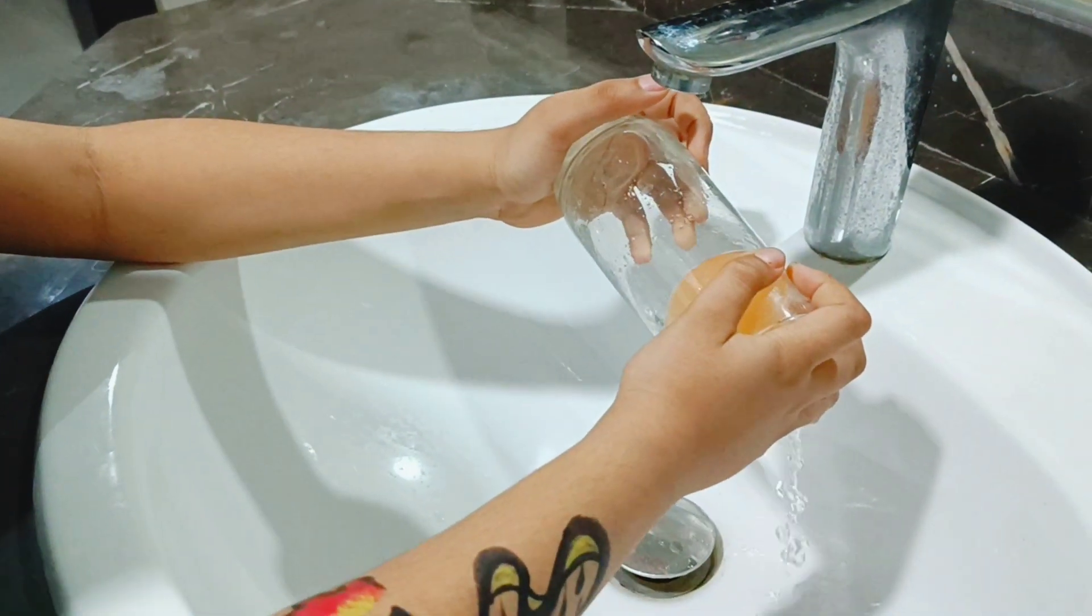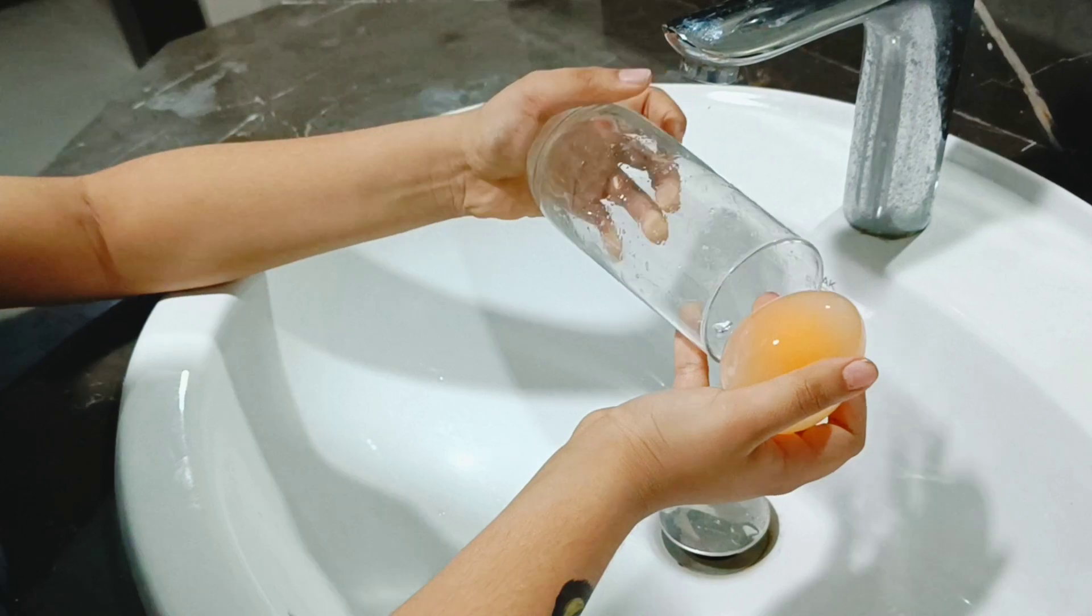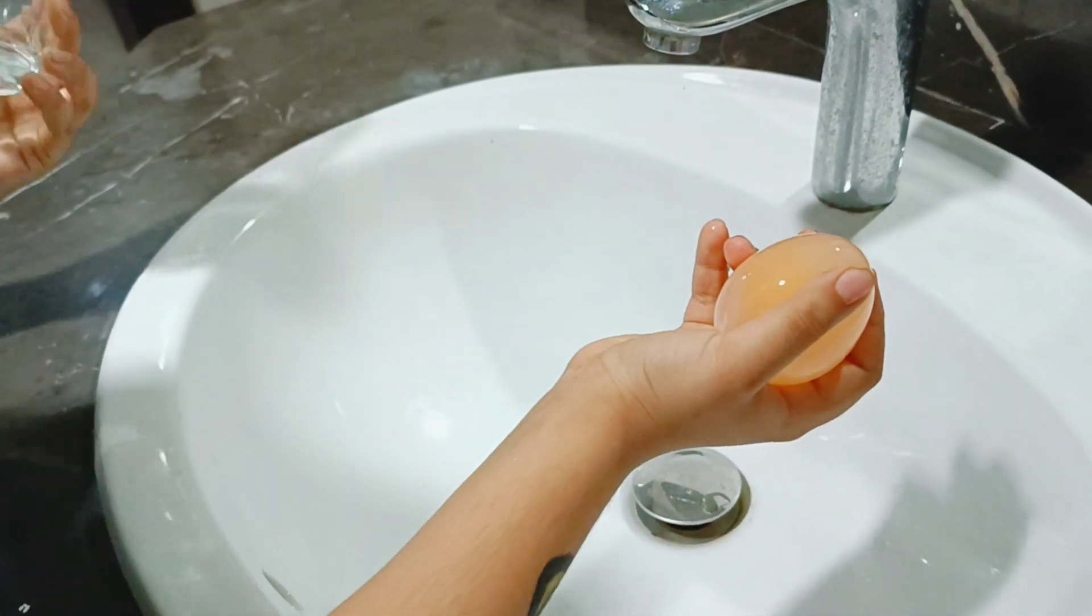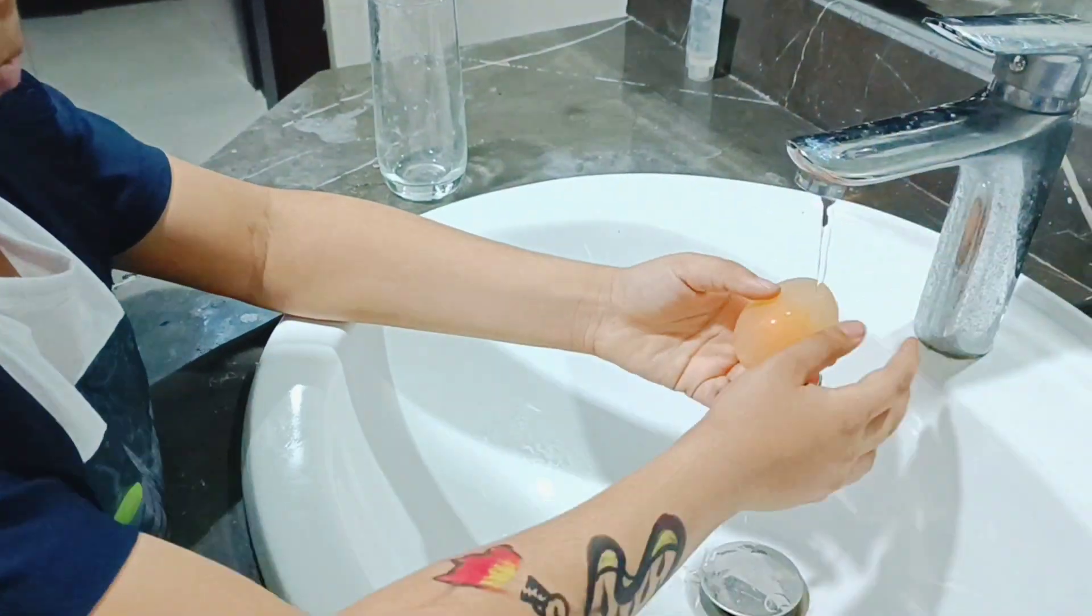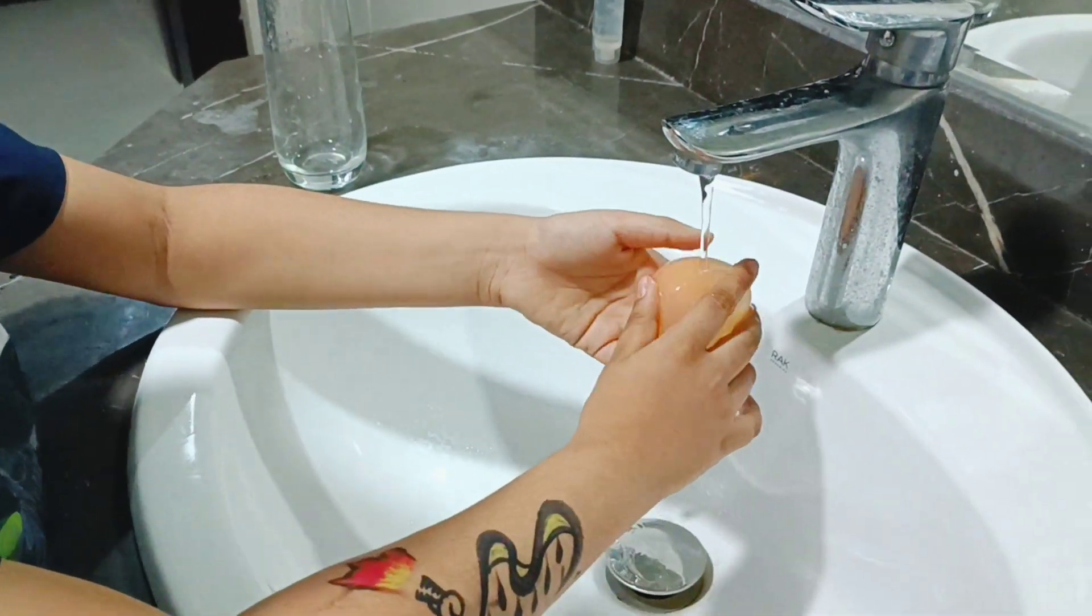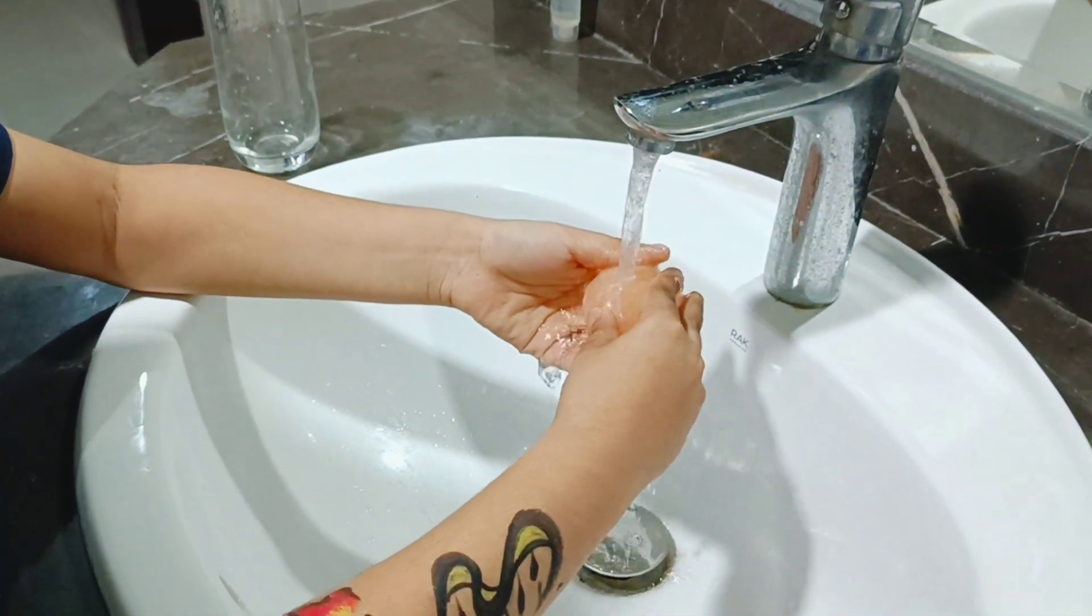And after that, you can just take the egg outside of the glass. Take it in your hand. And as you can see, it looks amazing. Beautiful. And wash it until the white thingy completely wipes out of the egg.